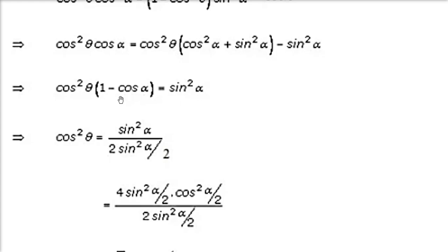Bring cos²θ to one side and sin²α to the other. Factor cos²θ: cos²θ(1 − cos α) = sin²α. Now 1 − cos α = 2sin²(α/2), and sin α written as 2 sin(α/2)cos(α/2) squared gives 4sin²(α/2)cos²(α/2). The 2sin²(α/2) terms cancel with 2 cancelling 2, leaving cos²θ = 2cos²(α/2). Taking the root: cos θ = ±√2 · cos(α/2).